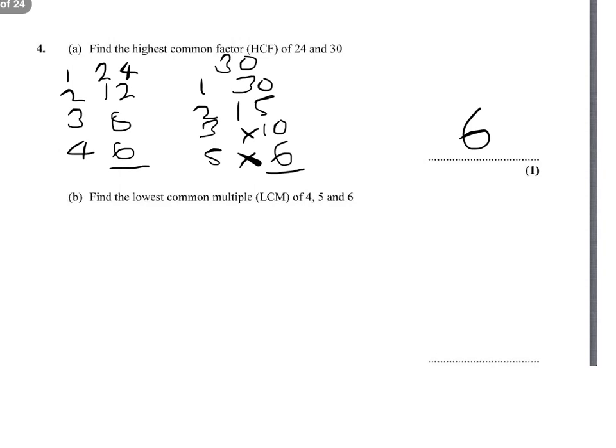Now the lowest common multiple technique I recommend you use is to multiply the numbers, but before you do that, divide out by any number that goes into all of them or a pair of them.